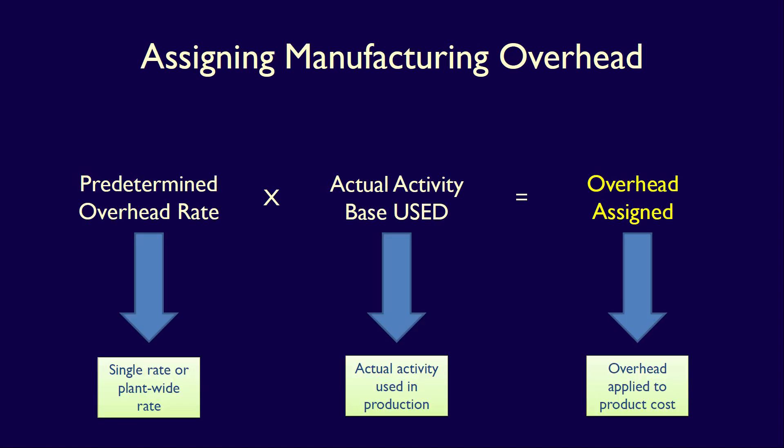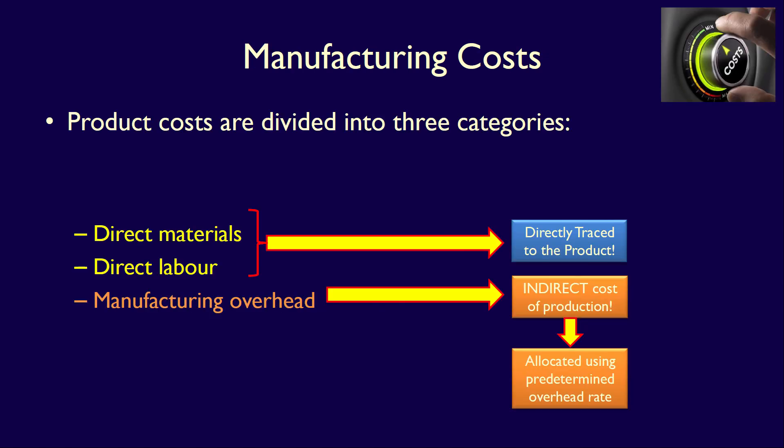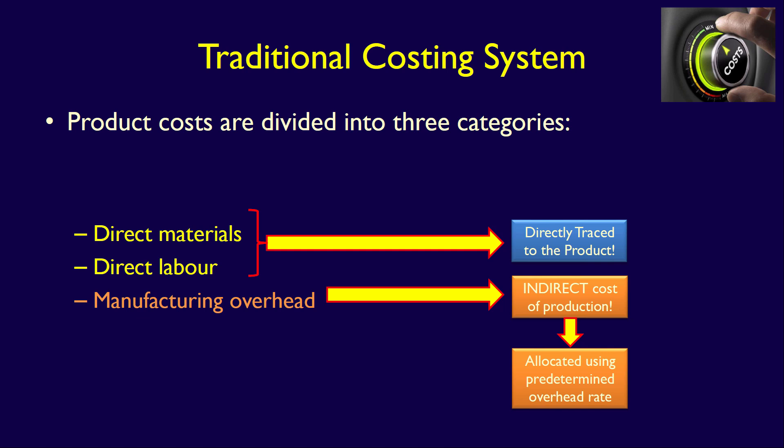By multiplying the predetermined overhead rate by the actual cost driver used in the production of a product, such as direct labor hours or machine hours, we can allocate a portion of the manufacturing overhead to each product. This costing system — where we directly trace direct materials and direct labor to the product but apply manufacturing overhead using a single overhead rate — is called the traditional costing system.